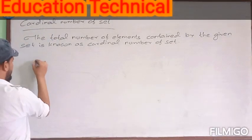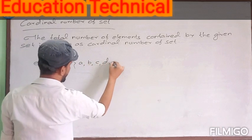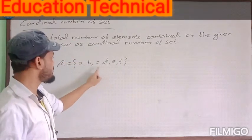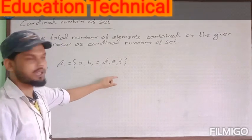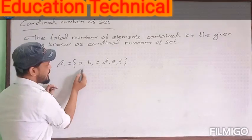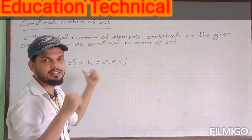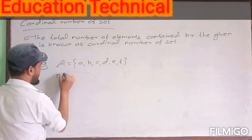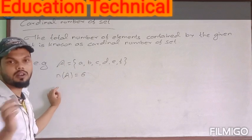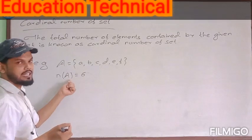For example, suppose set A has the elements A, B, C, D, E, F. We find that set A has 6 elements. We count them: 1, 2, 3, 4, 5, 6. So the total number of elements contained by set A is 6, and we write it as n(A) = 6, where n represents the cardinal number of the given set.